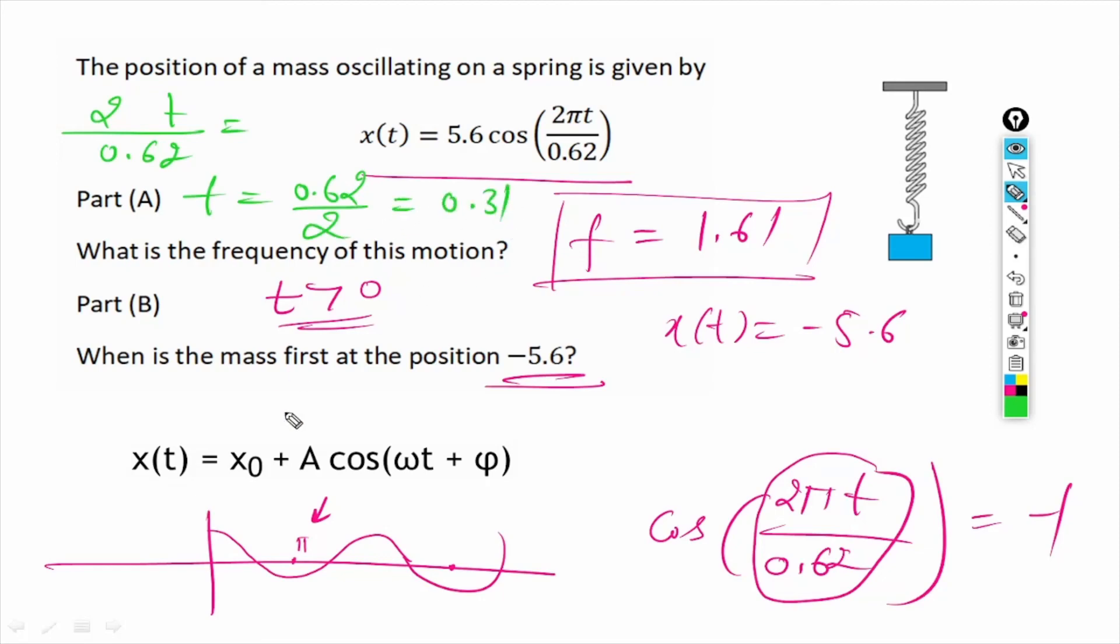which equals 0.31. So for part B we have t equals 0.31.